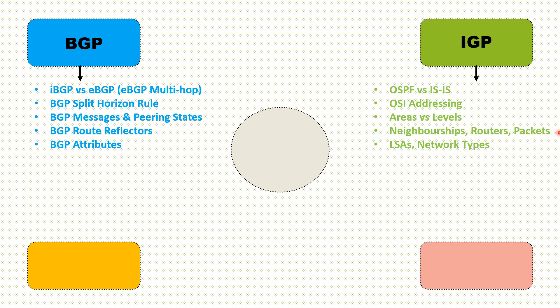You should know about OSI addressing, because ISIS doesn't use IPv4 addressing — it uses OSI addressing. You should know about areas in OSPF or the levels in ISIS, such as the backbone area, Level 2 routing, and Level 1 routing. You should also know the neighborship states for OSPF, and router types like DR, BDR, regular router, and backbone router.